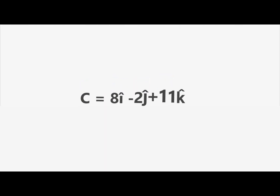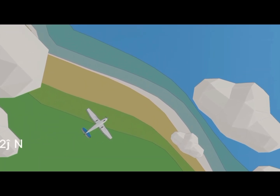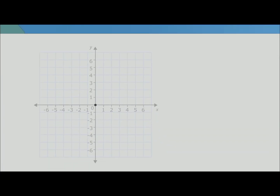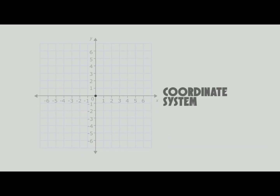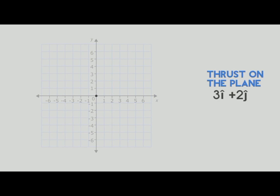If they are in component form, we can simply add their individual components to get the resultant. Now you know all the knowledge about vectors needed to solve the problem at the start of this video. So the situation was: the plane was moving with this vector, and then wind starts blowing with a force of this vector.